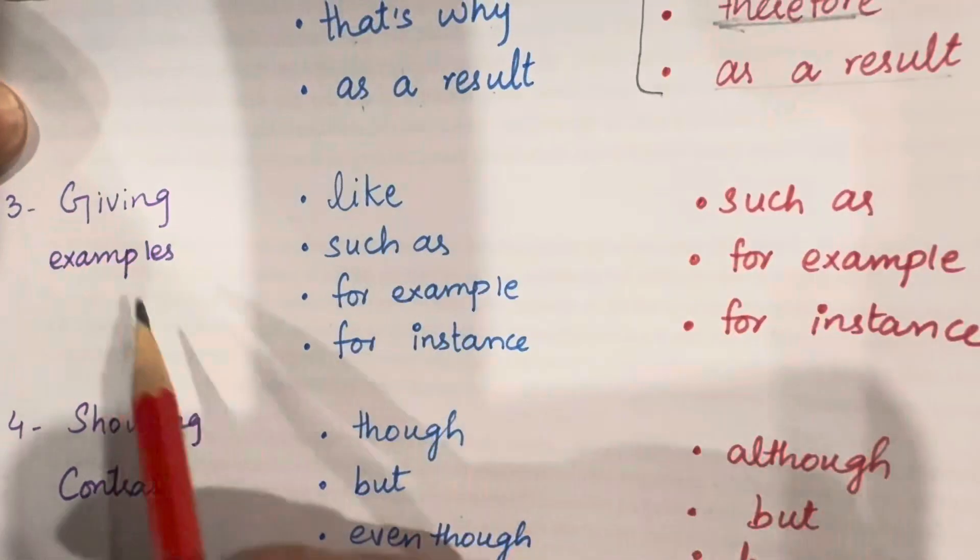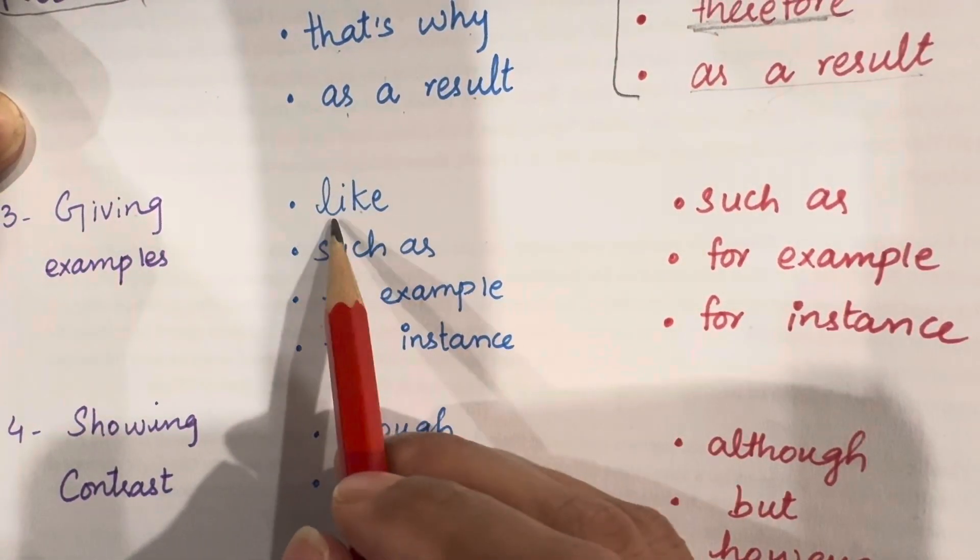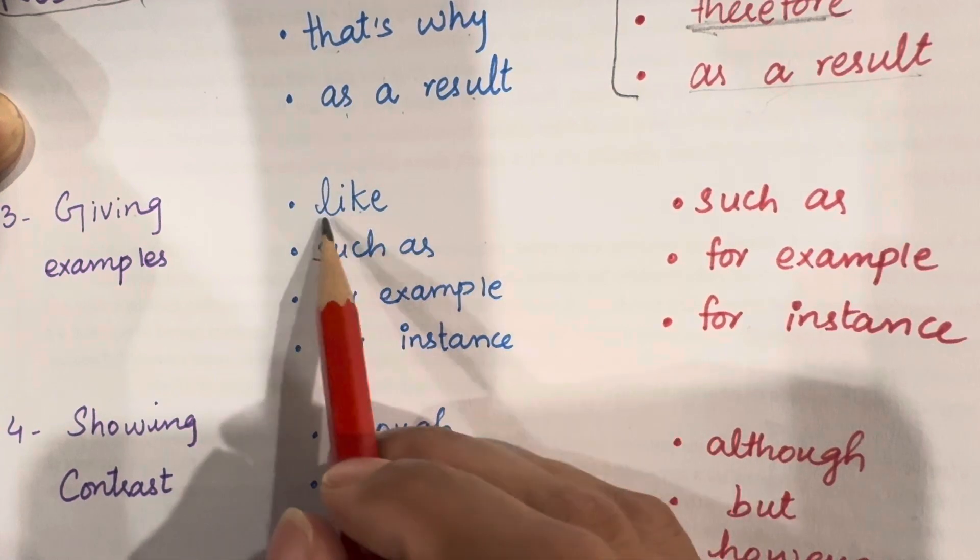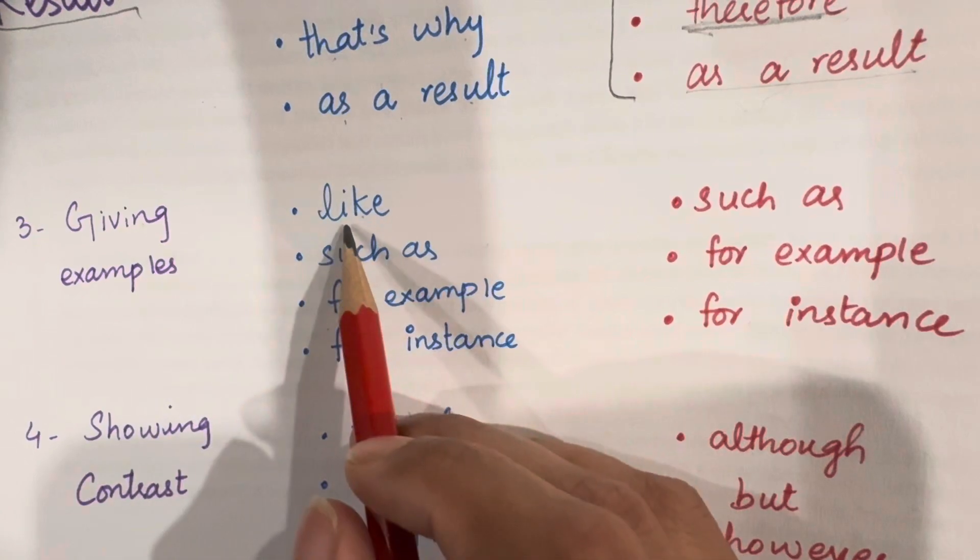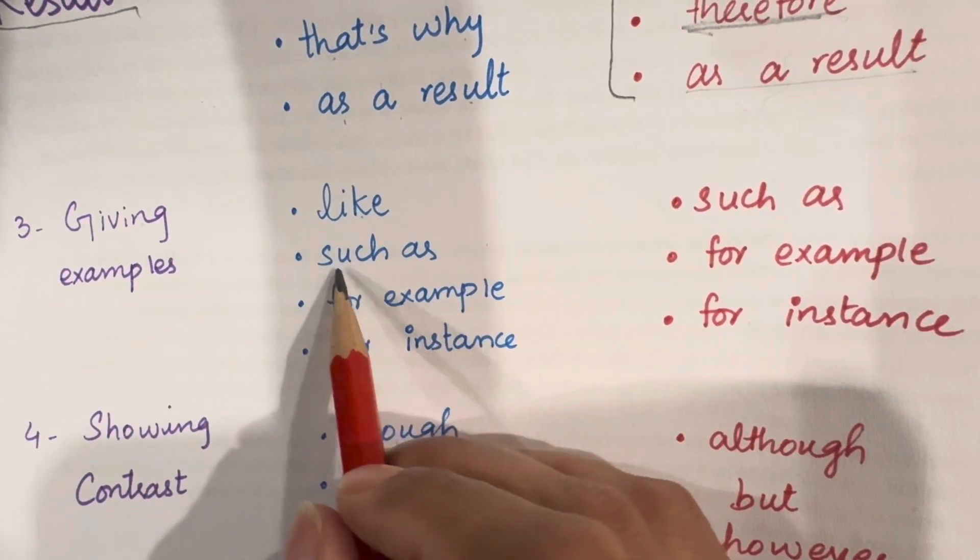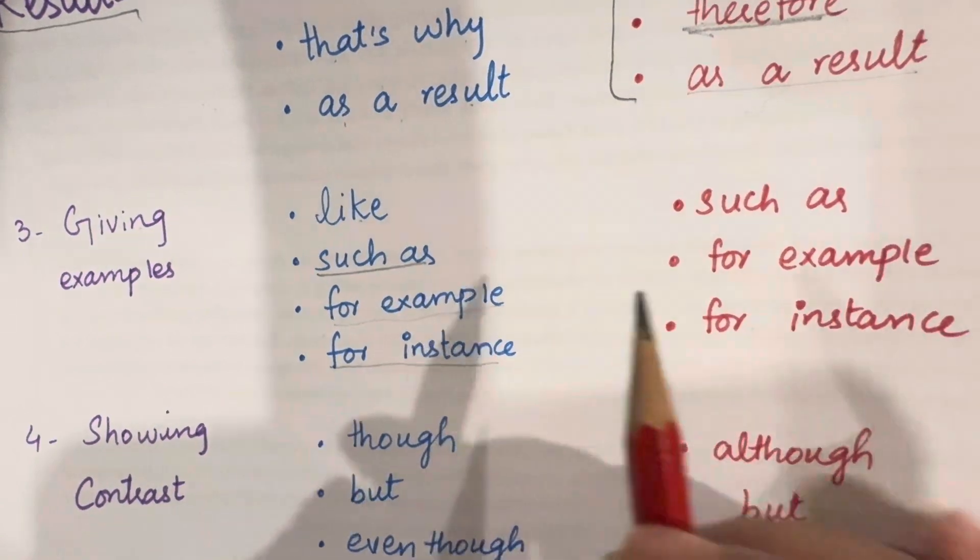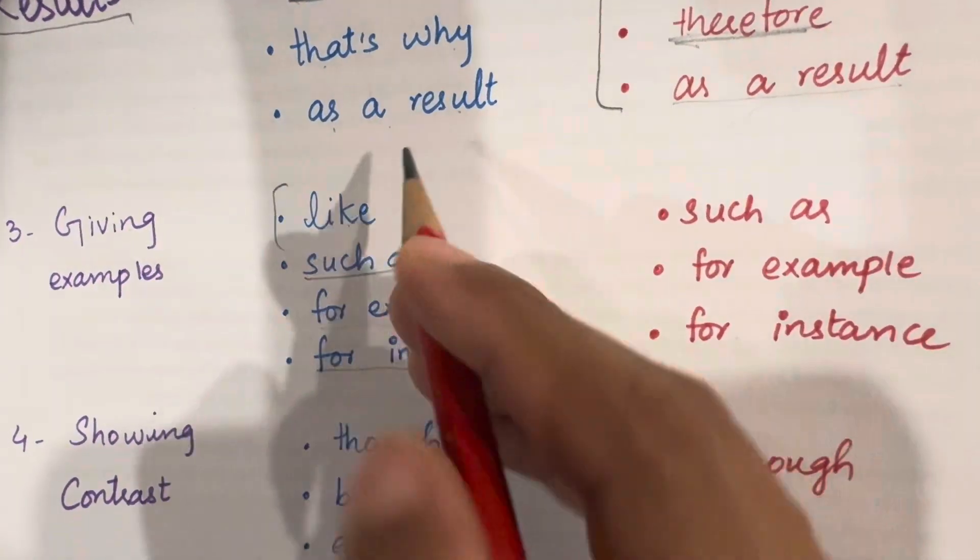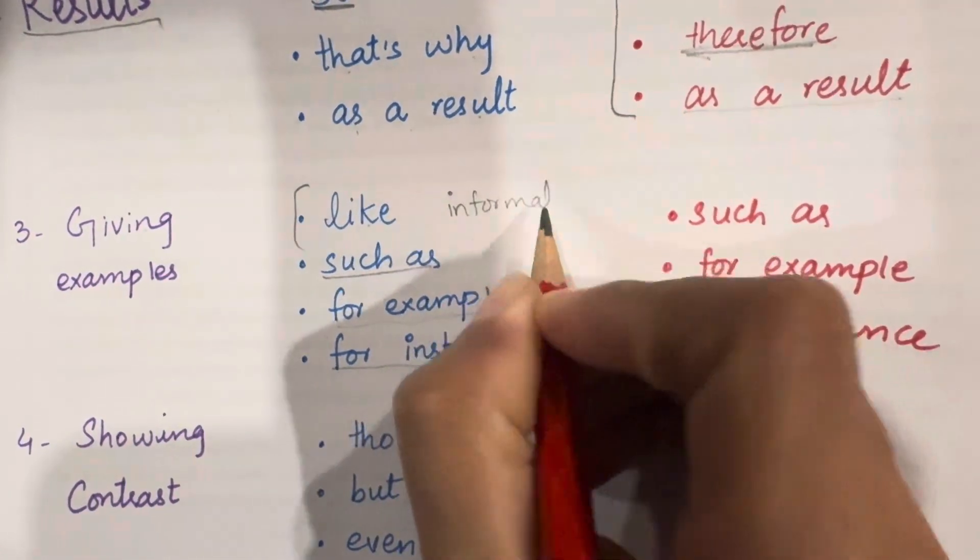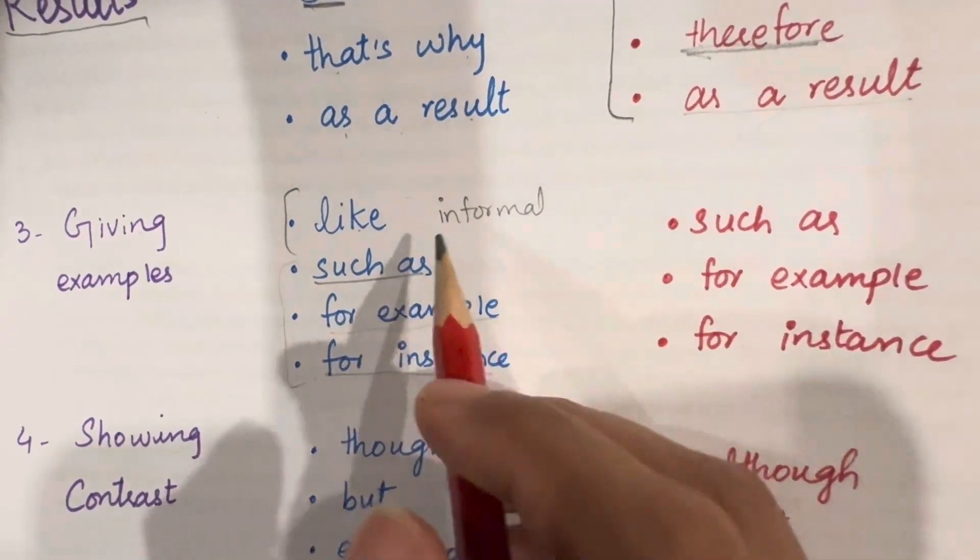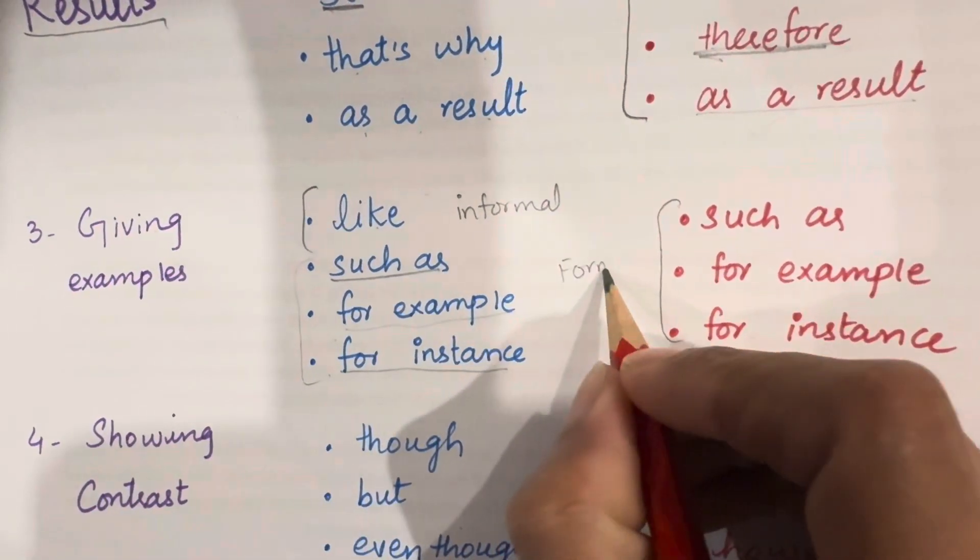Next is giving examples. So, for speaking, if you want to give an example, then you can say like, or you can say such as, for example, for instance. Now, this word like is an informal word, and the rest of these are formal words. Now, the writing is only formal words. You have to use formal words, formal English. But in speaking, you can also speak informal words.